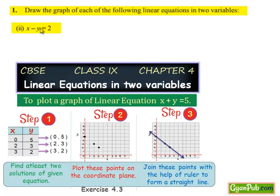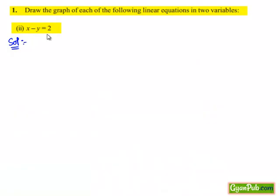Let's see the second part x minus y equals 2. Moving on to the solution, the given equation is x minus y equals 2, which is a linear equation in two variables x and y. We need to draw the graph of this equation.